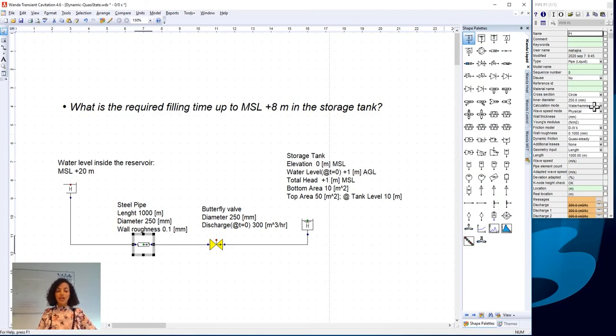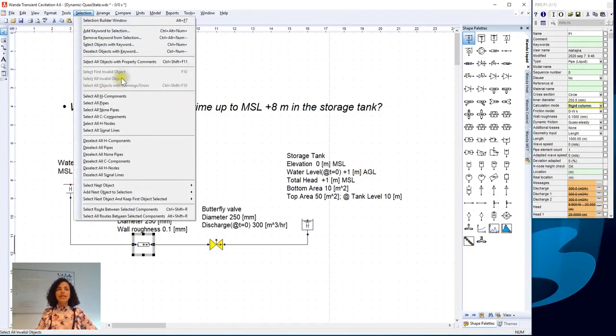Thus, we choose a calculation mode of rigid column which ensures that the fluid in the pipe is recorded as incompressible. Here we choose rigid column. Now we go to Selection and we see that we have no invalid objects in our model at the moment.